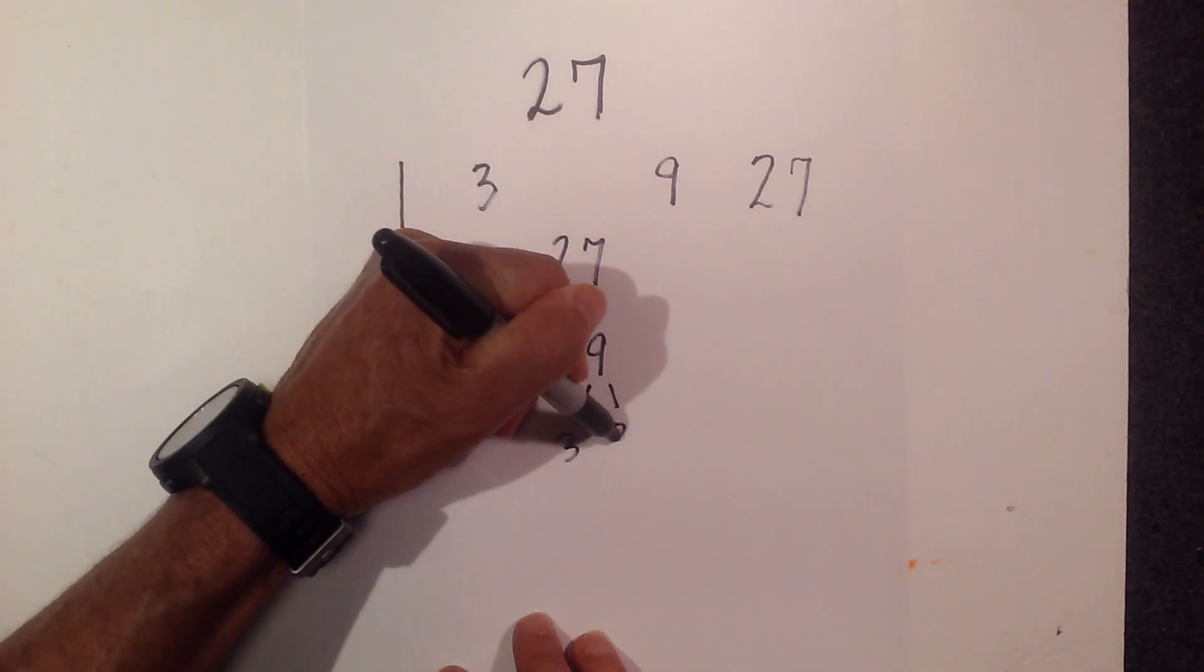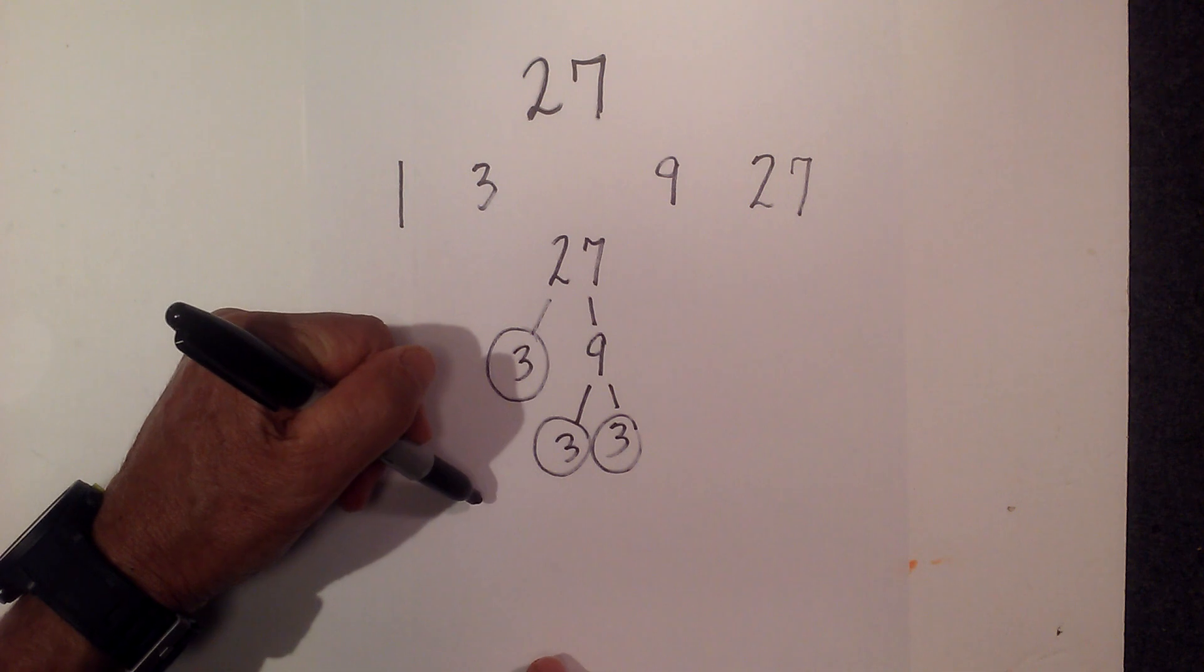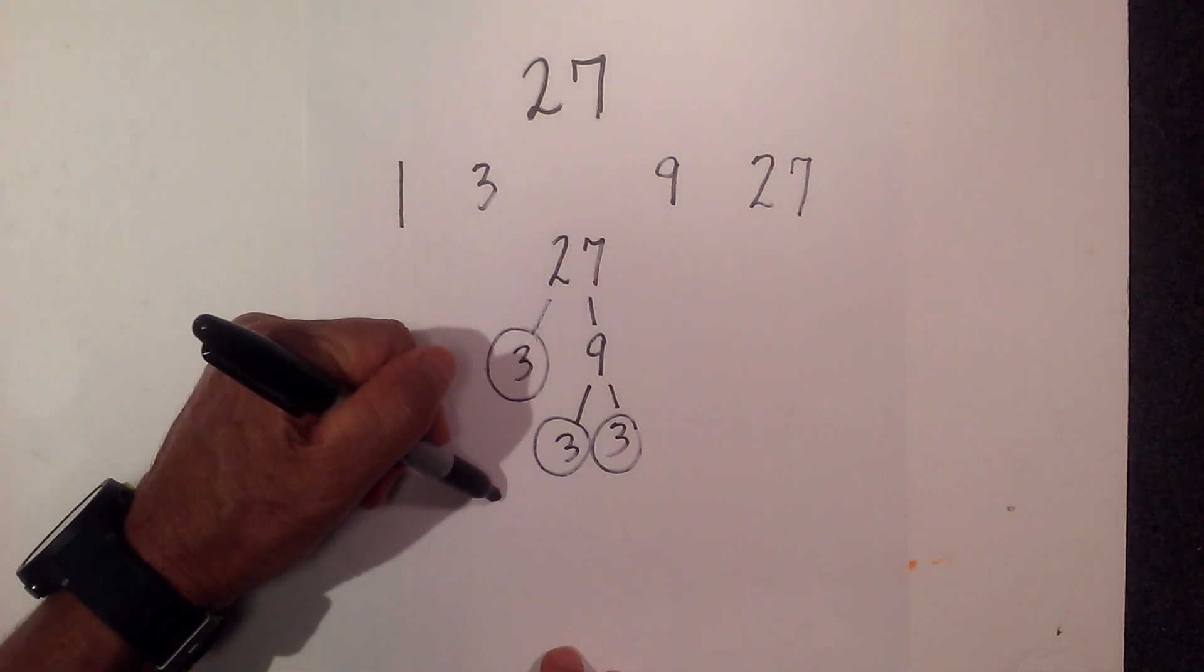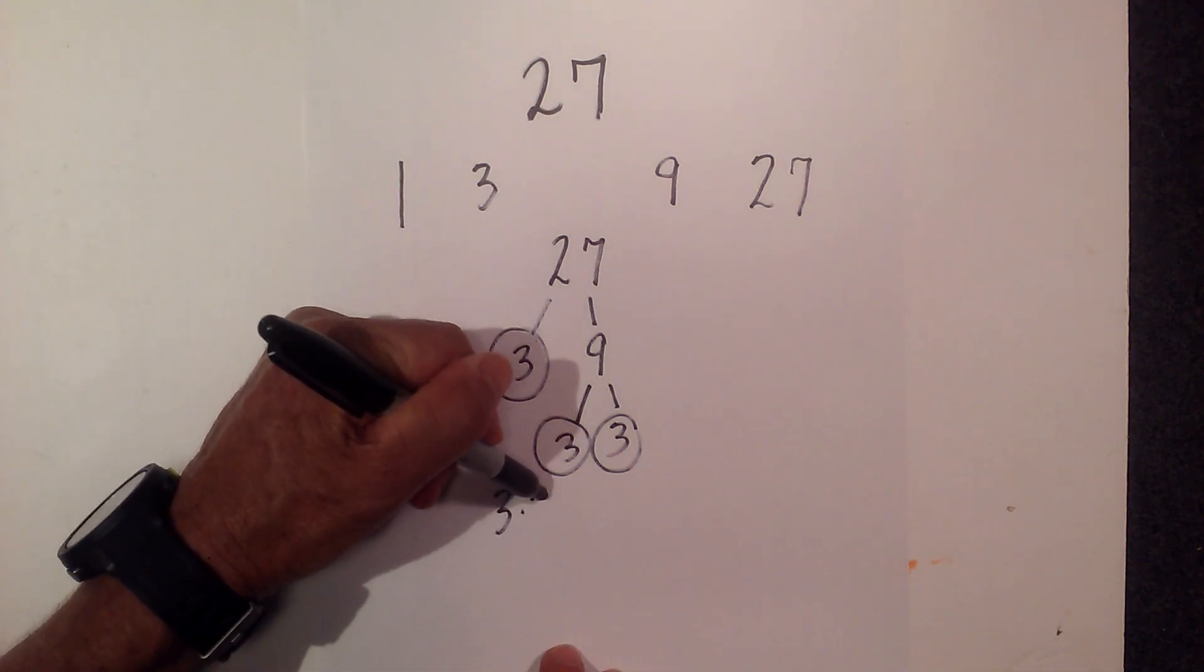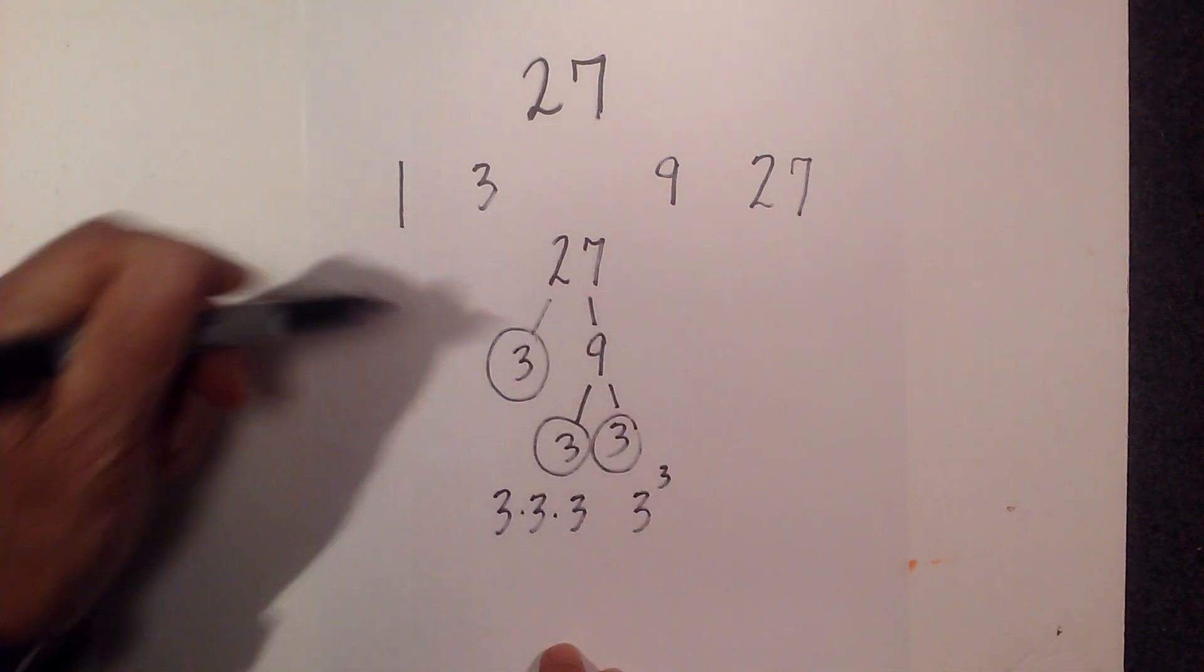Now 3 times 3 equals 9. So the prime numbers, or the prime factorization of 27, is 3 times 3 times 3, or 3 to the third.